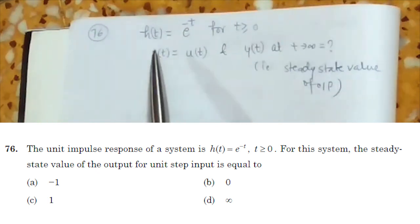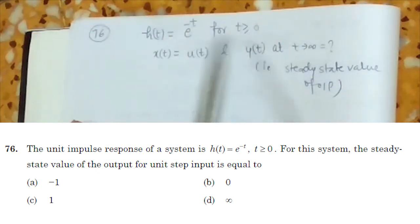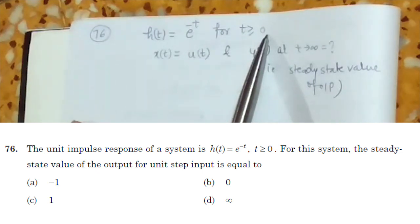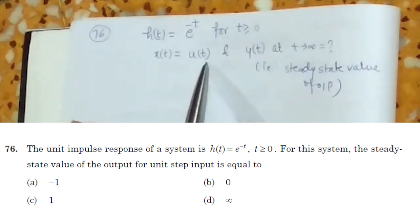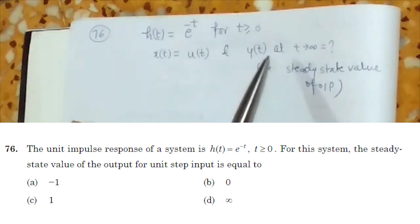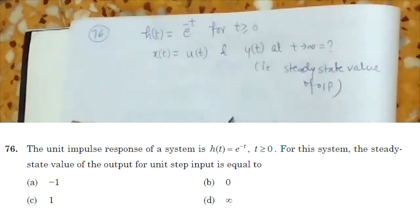It is given as h(t) = e^(-t) for t greater than or equal to 0, and we have given our input as unit step input and we have to find the steady state value of the output.